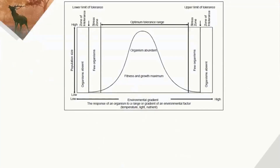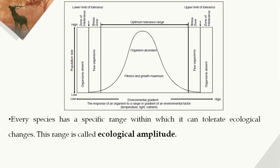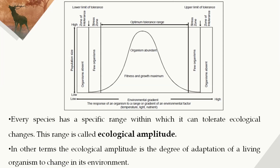To proceed with ecological amplitude, we first need to know about the ecological tolerance range of a particular species. A species has an optimal tolerance range under a particular set of conditions. Outside that condition, the fitness or productivity is reduced, and there is a point after which there is a zone of intolerance. Based on this range, the ecological amplitude can be defined for a particular species — every species has a specific range within which it can tolerate ecological changes, and this range is called ecological amplitude.